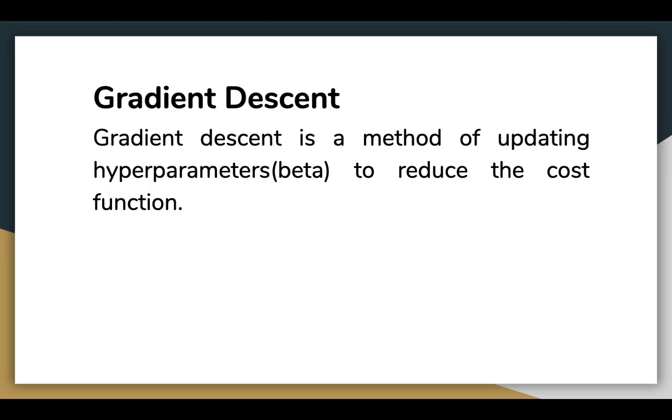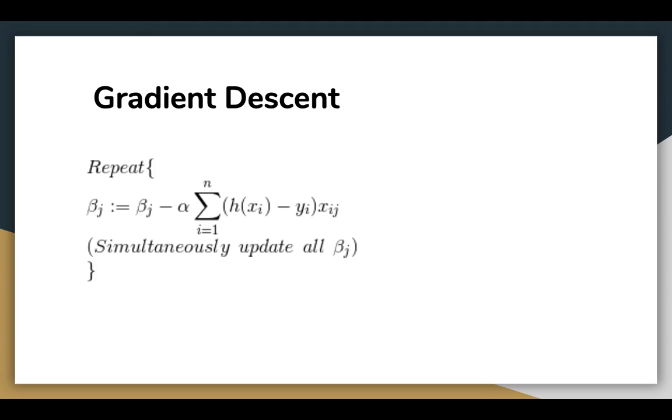The procedure is identical to what we did for linear regression. To understand more about gradient descent, please find the link in the description which will explain linear regression and gradient descent. To minimize the cost function, we have to run the gradient descent function on each parameter, and that is how logistic regression works.